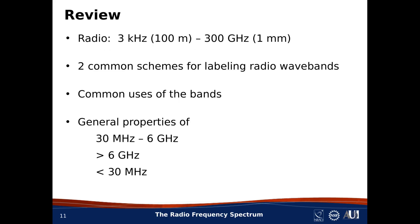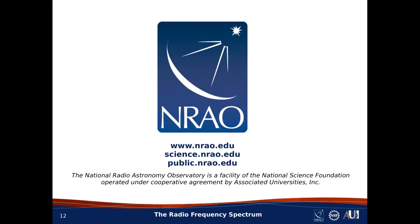Let's wrap up with a quick review. The radio band is commonly defined to be frequencies below 300 GHz, with wavelengths from about 1 mm up to hundreds of meters. I showed you two common schemes for labeling the radio wave bands, and mentioned some common uses. I also gave a high-level description of radio propagation properties. From that description, you can see that 30 MHz up to 6 GHz will get a lot of attention in future lessons, frequencies above 6 GHz will also receive some attention, and we'll probably not have much more to say about bands below about 30 MHz. That concludes this lesson on the radio frequency spectrum — thanks for listening.